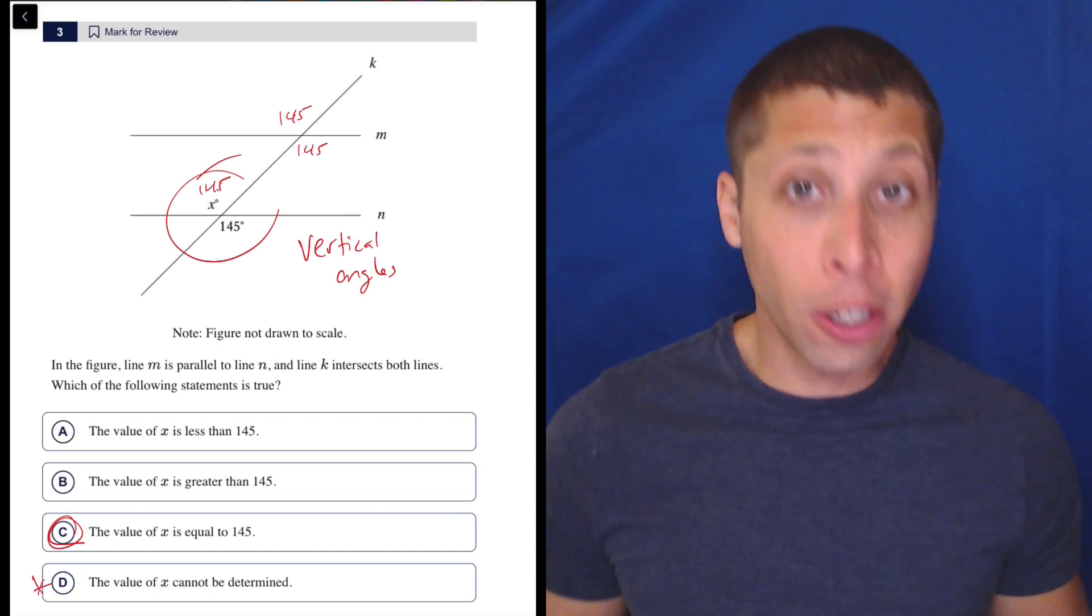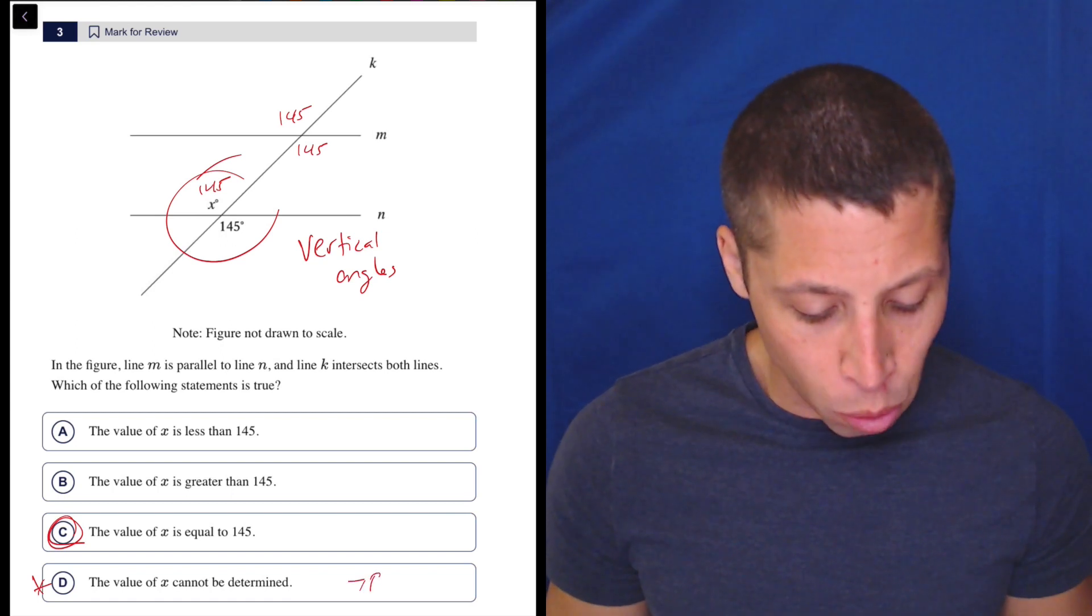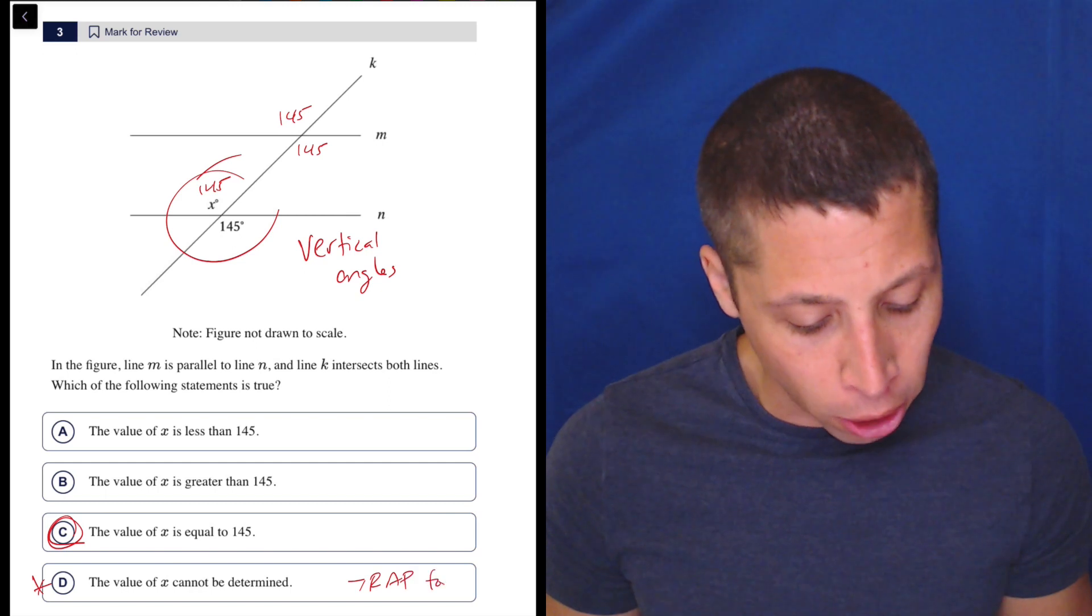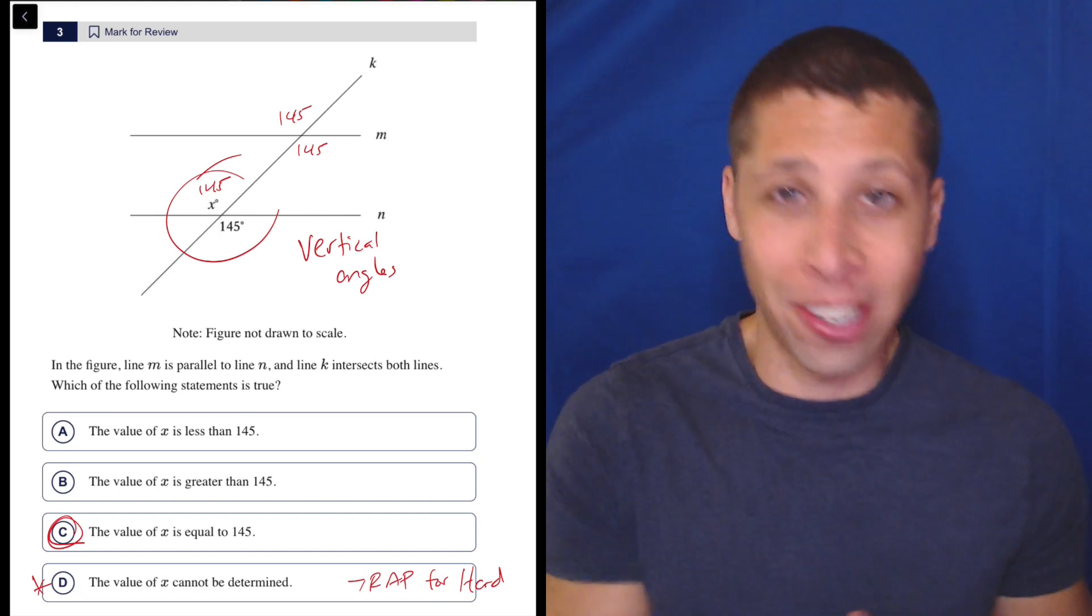Basically, on a hard question in either module, later in the module, if we had this answer choice, it's almost always a trap for hard questions, because what they're hoping happens is that it's a hard question, you don't know how to solve it,